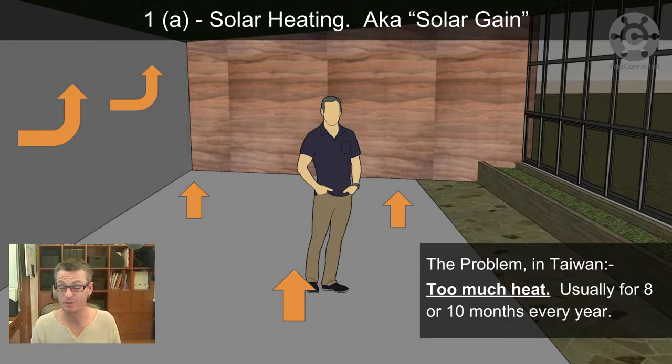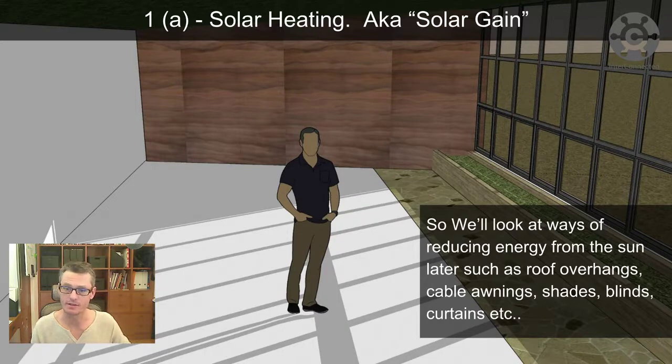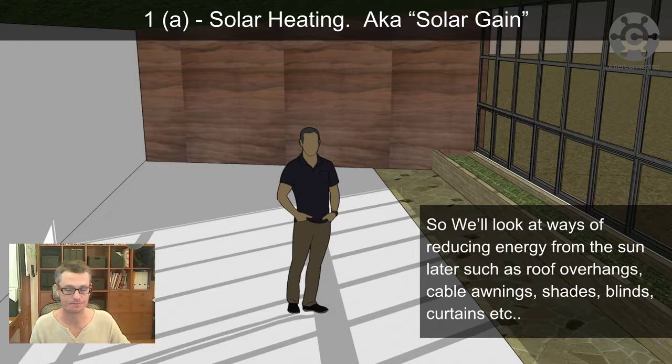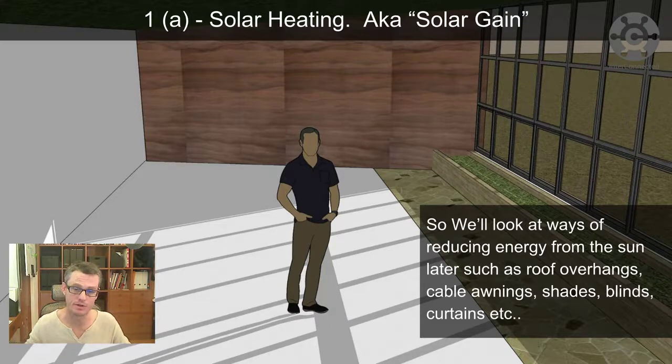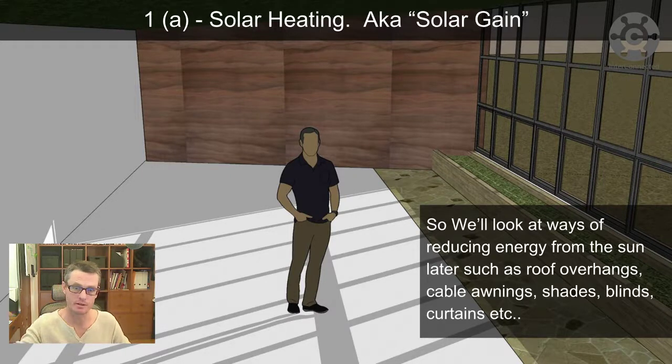The problem in Taiwan though, usually, is too much heat for about eight or ten months of the year. It feels like all the time. So we'll look at ways of reducing energy from the sun later, such as roof overhangs, cable awnings, shades, blinds, curtains, etc. We've got in the model for the eco village some bamboo and trees to show how shade from those affects where the sun comes into the building or onto the walls of the building as well.